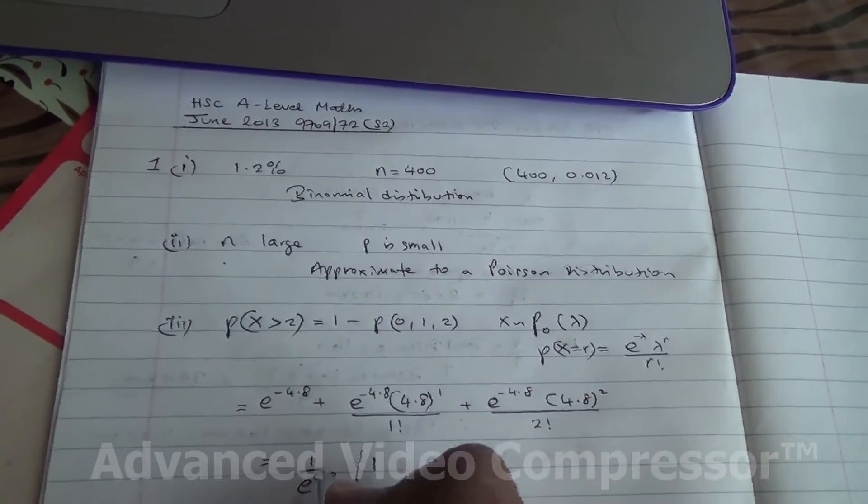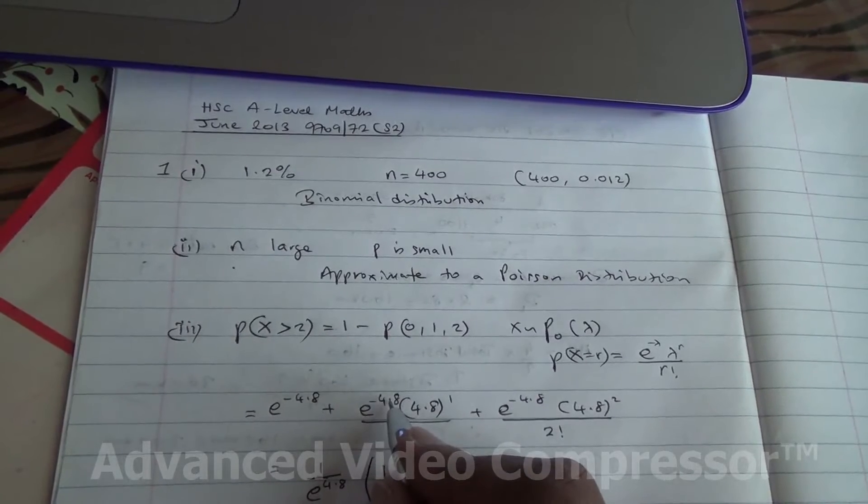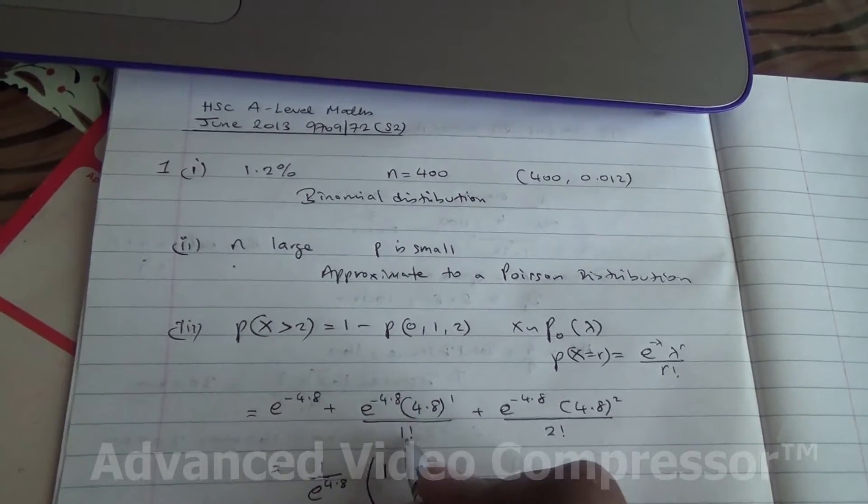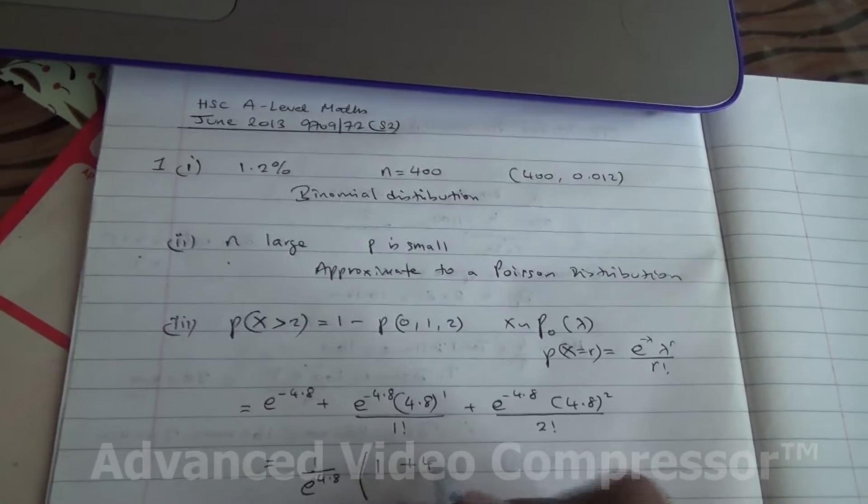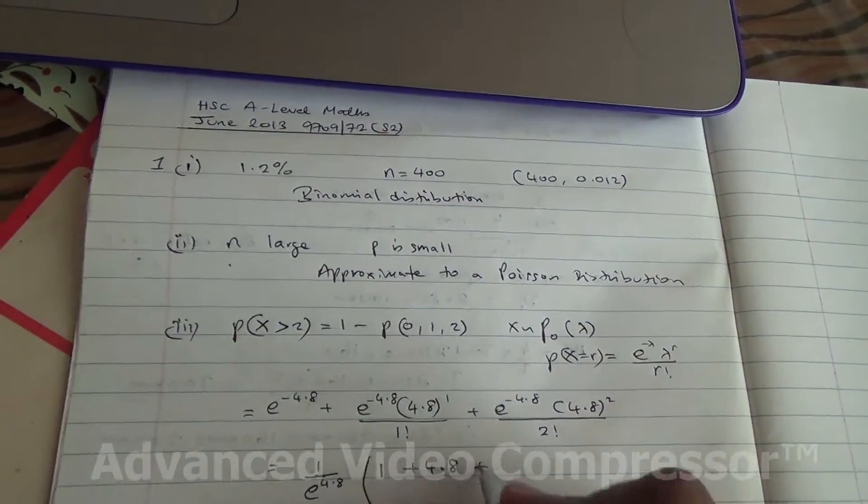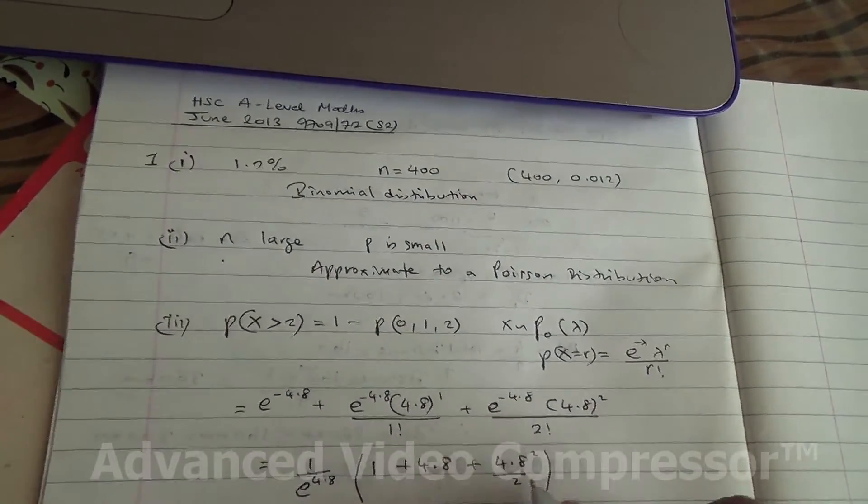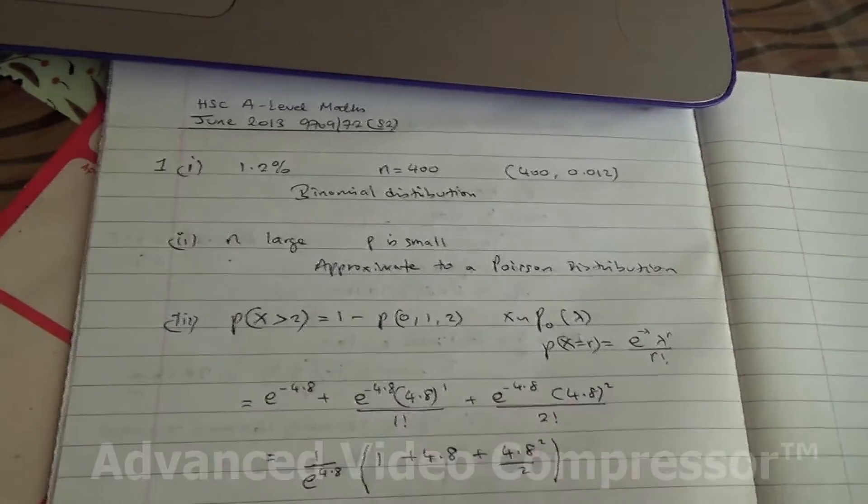So e to the power of minus 4.8 is exactly the same as 1 over e to the power of 4.8. In brackets inside, we are going to get 1 times this. And here e to the power of minus 4.8 is outside, and here we get 4.8 to the square over 2. The factorial of 2 is 2.